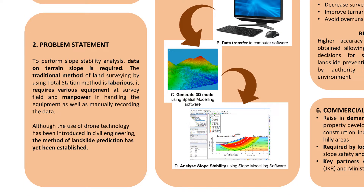Next we go on to the problem statement. In civil engineering there is a critical sector which is geomatics. Geomatics covers landslides, slopes, and things that relate to earth and rocks. In order to perform slope stability analysis we require data regarding the terrain of the slope. Conventionally in land surveying we use total station, but total station is actually quite tedious work.